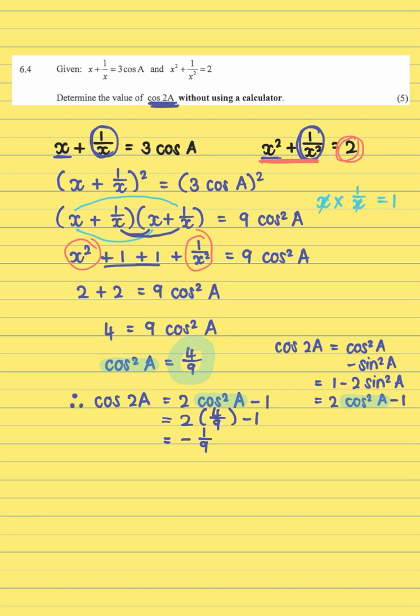I don't have the mark allocation in front of me, but I think that you will get a mark for squaring both sides. So your first mark will probably be for this, for both sides there. Then you will get a mark for replacing your x squared plus 1 over x squared with 2. That will be the next mark. You will then get a mark for cos squared A equals 4 over 9. So for making cos squared A the subject. Then your fourth mark will be for using that identity, the one that has the cos squared A in. And then your fifth mark will be for your final answer.